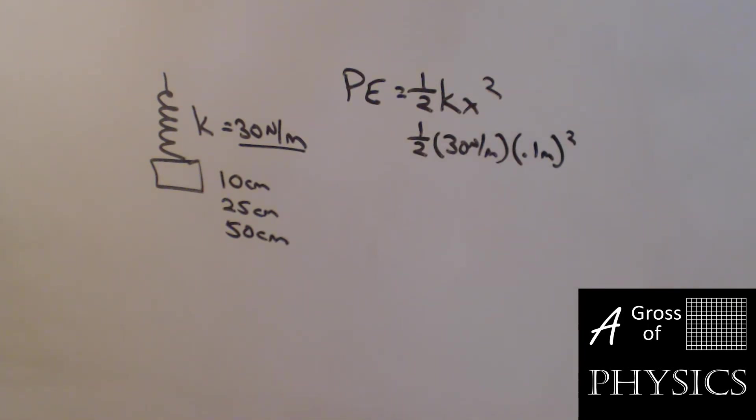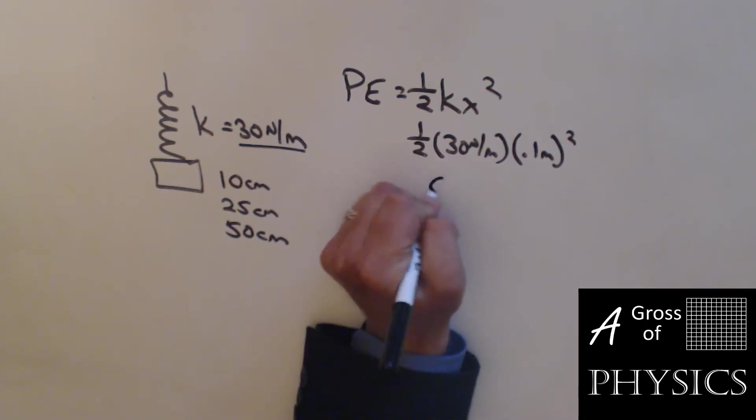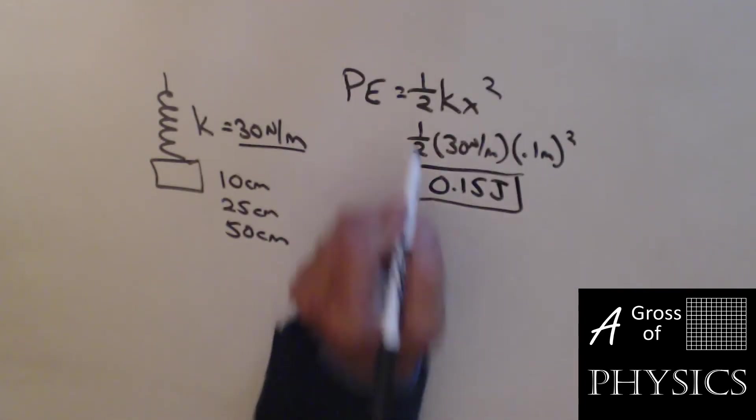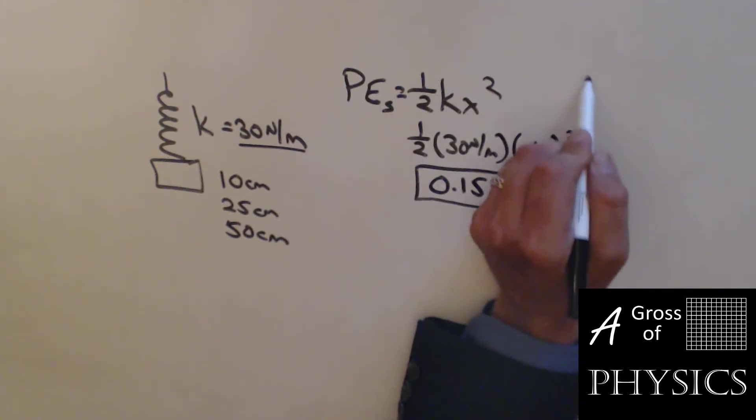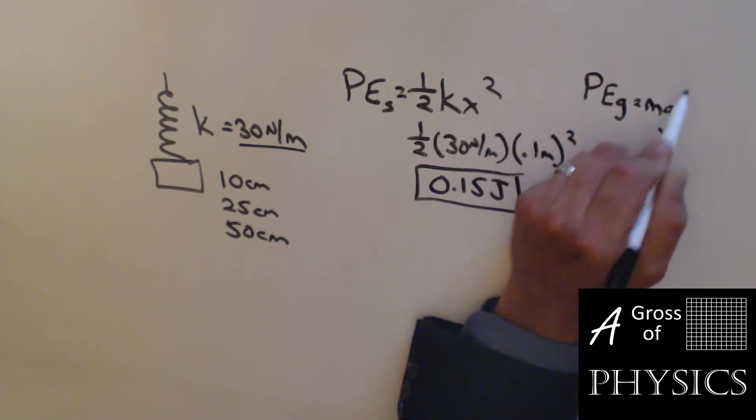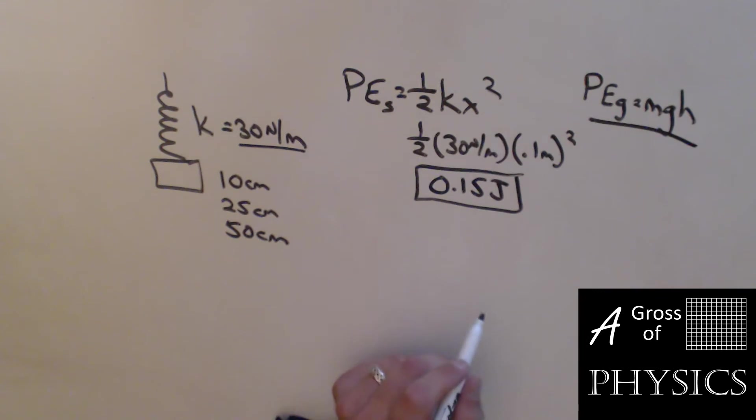So for the first one, 0.5 times 30 times 0.1 squared, and I get an energy value of 0.15 joules. That's the potential energy stored in the spring. We usually denote the spring with the PE sub s versus potential energy of gravity, which was mgh. So that's the difference between the two.